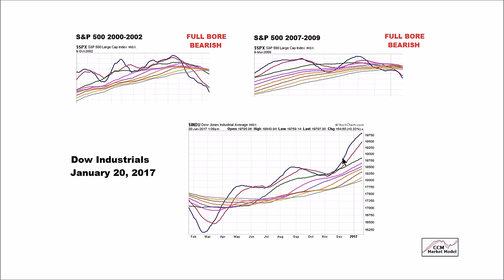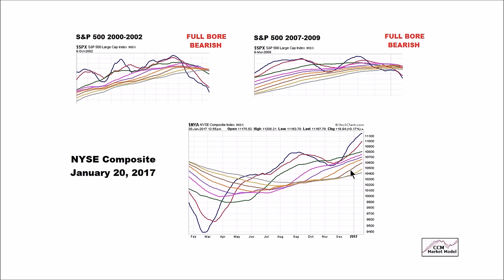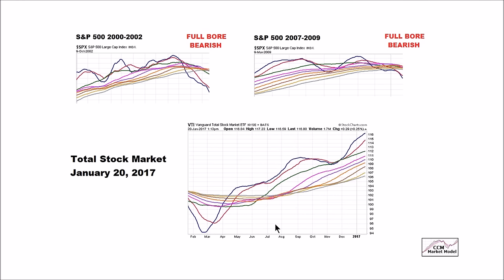The 30-day moving average hasn't even rolled over yet as of January 20th. We also still have a constructive look as of January 20th for the NYSE composite. You can see the present day with blue on top and positive slopes on all of the moving averages — it really doesn't look anything like blue on the bottom with negative slopes. Healthy markets tend to have broad participation. Going all the way out to the Vanguard total stock market ETF as of January 20th using the same moving averages, we still have a constructive look from a risk-reward perspective.